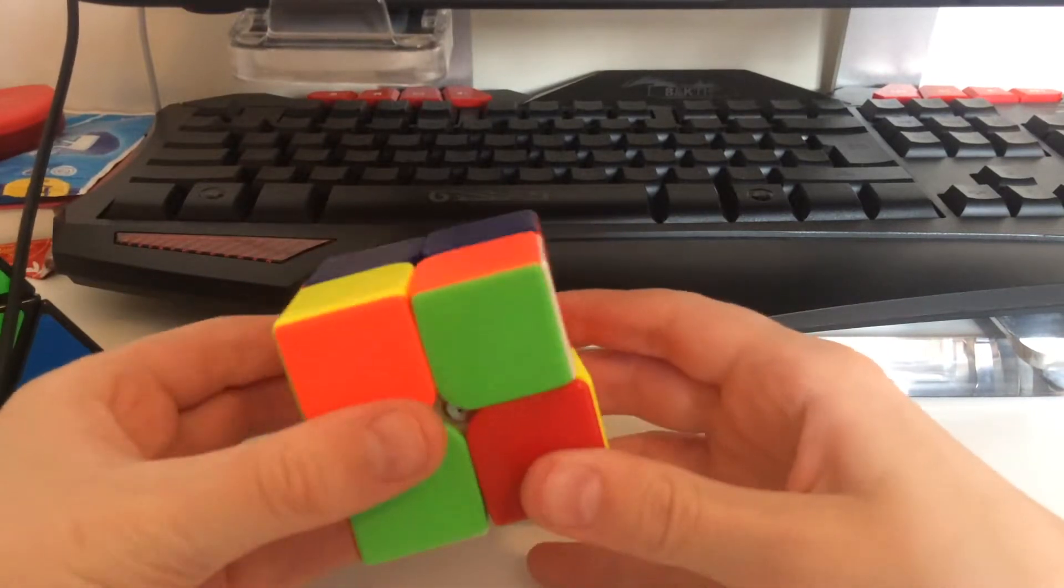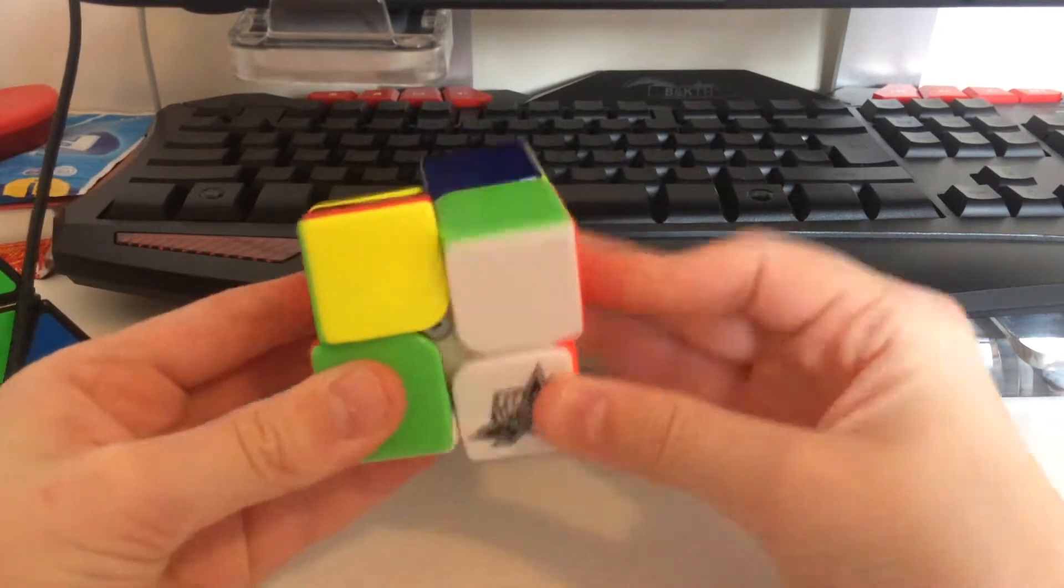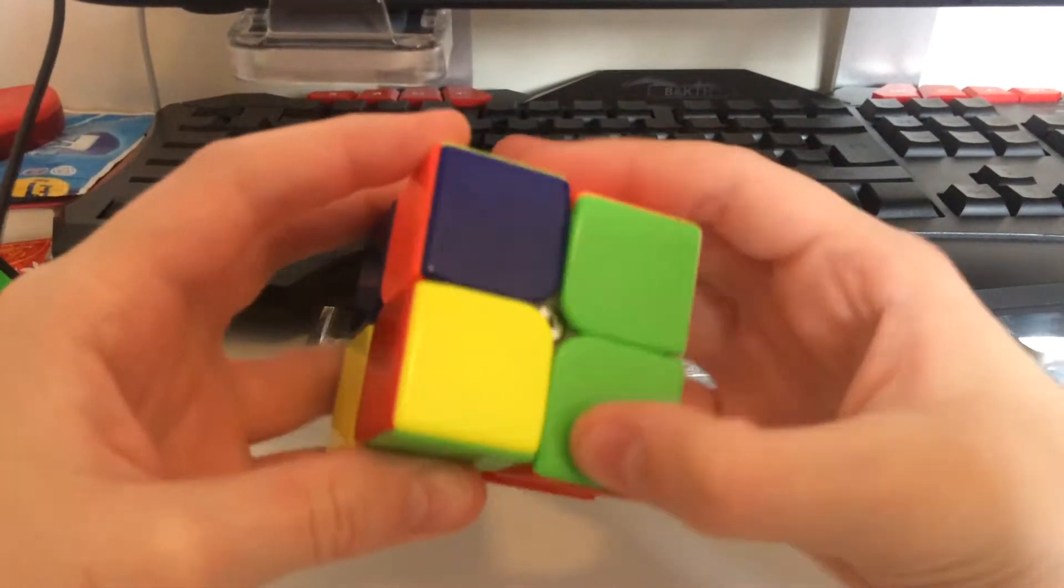Then push it like that so it's facing like that, and just do this. Now it's in place, and we've got the whole bottom layer.